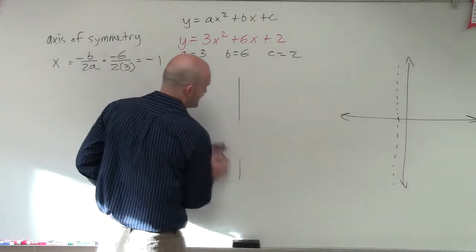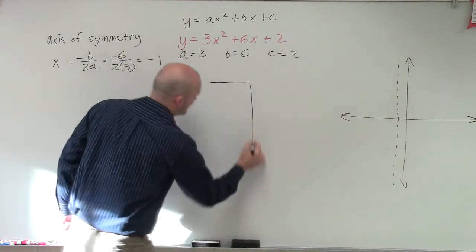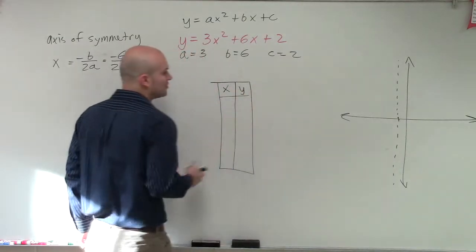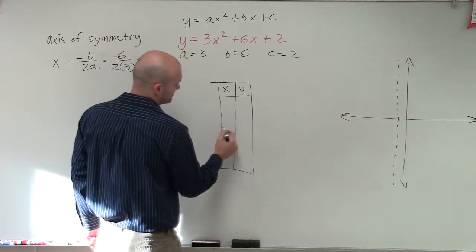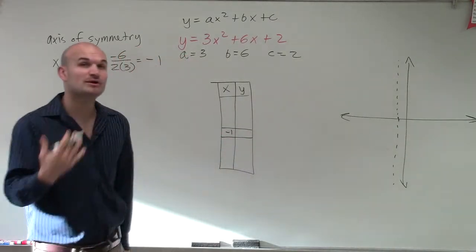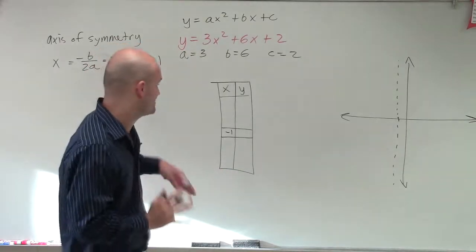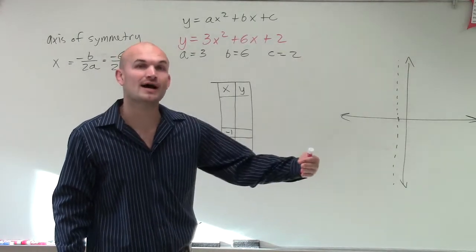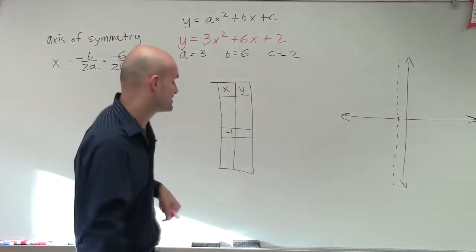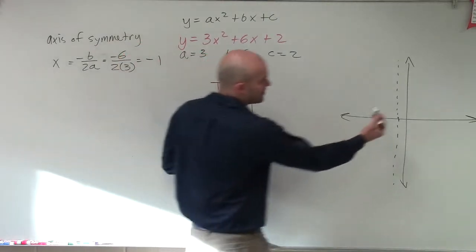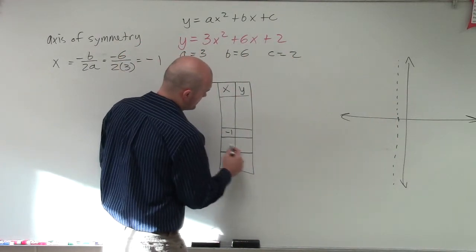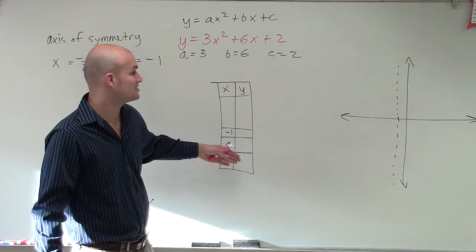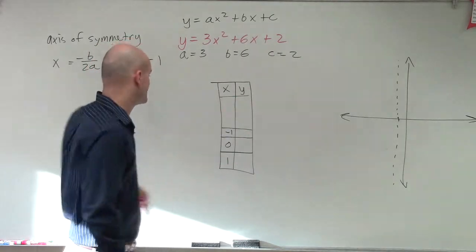What I'm going to do is create a table of values and pick three points. The first x-coordinate I'll pick is the vertex, because we know the vertex has the same x-coordinate as the axis of symmetry — so I'll evaluate at x equals negative 1. Then I'll pick two points to the right: 0 and 1. These are the x-coordinates, and now I need to figure out the corresponding y-coordinates.